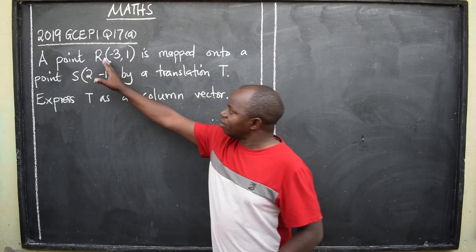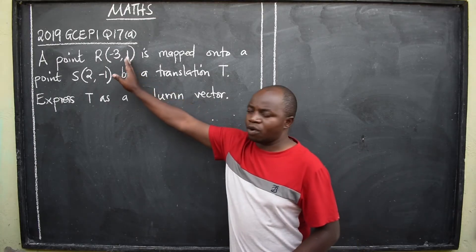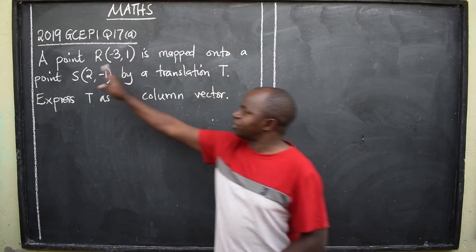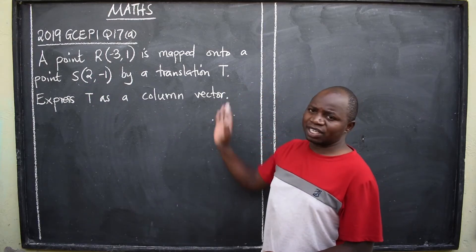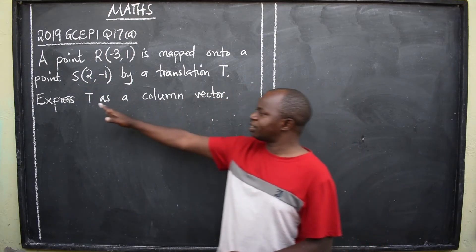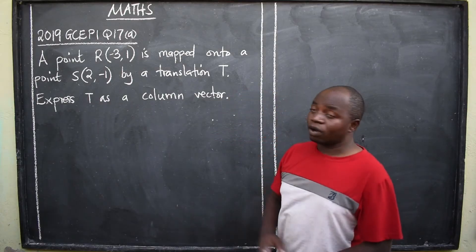A point R, which is negative 3, 1, is mapped onto a point S, which is 2, negative 1, by a translation T. Let's express T as a column vector.